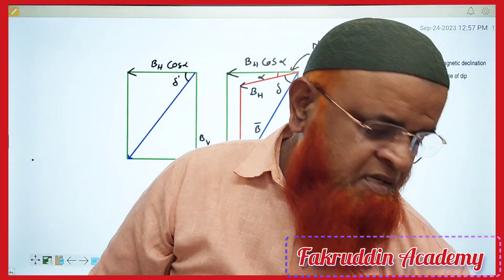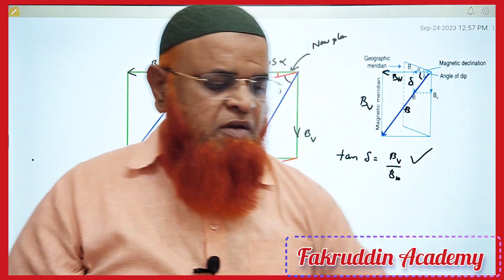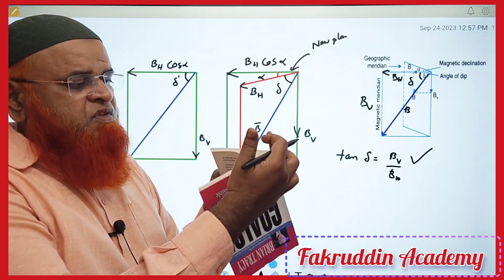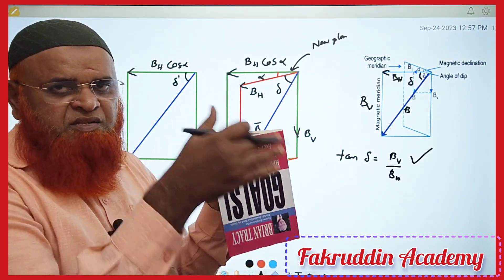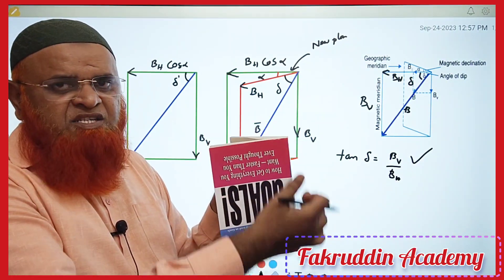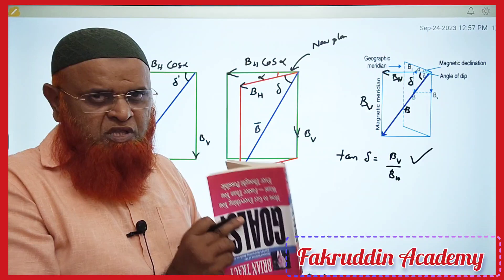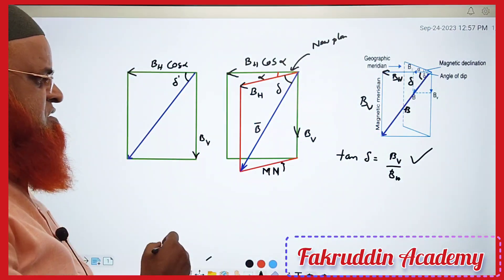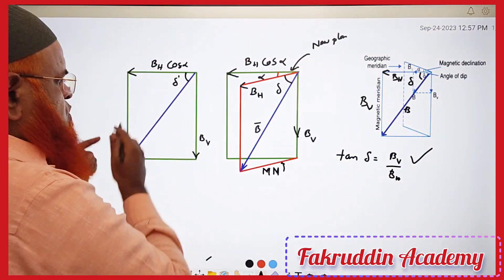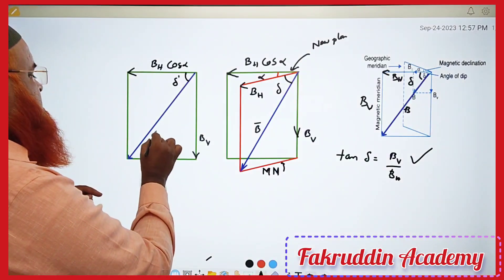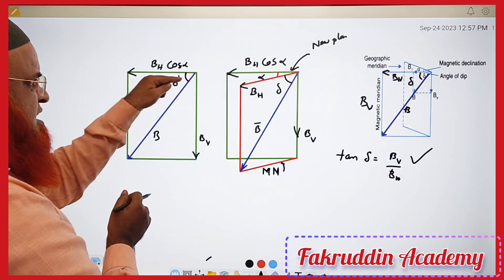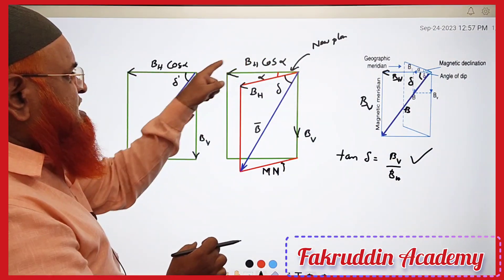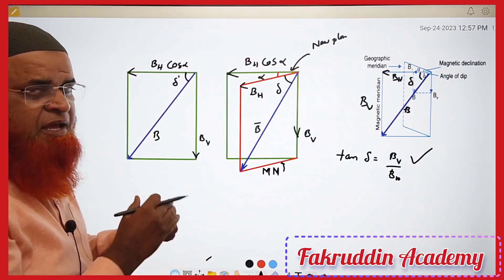If I imagine this to be a big book, when you open the book, this edge is going to be common for both planes. So apparent dip means the resultant made with the component of BH — that is BH cos alpha — is taken as apparent dip.